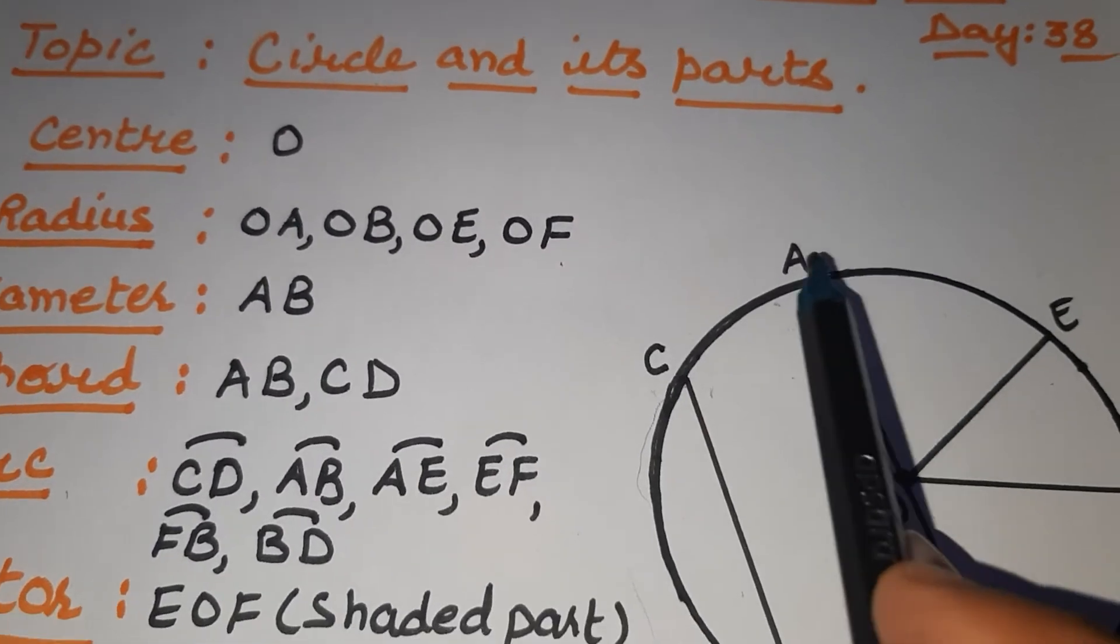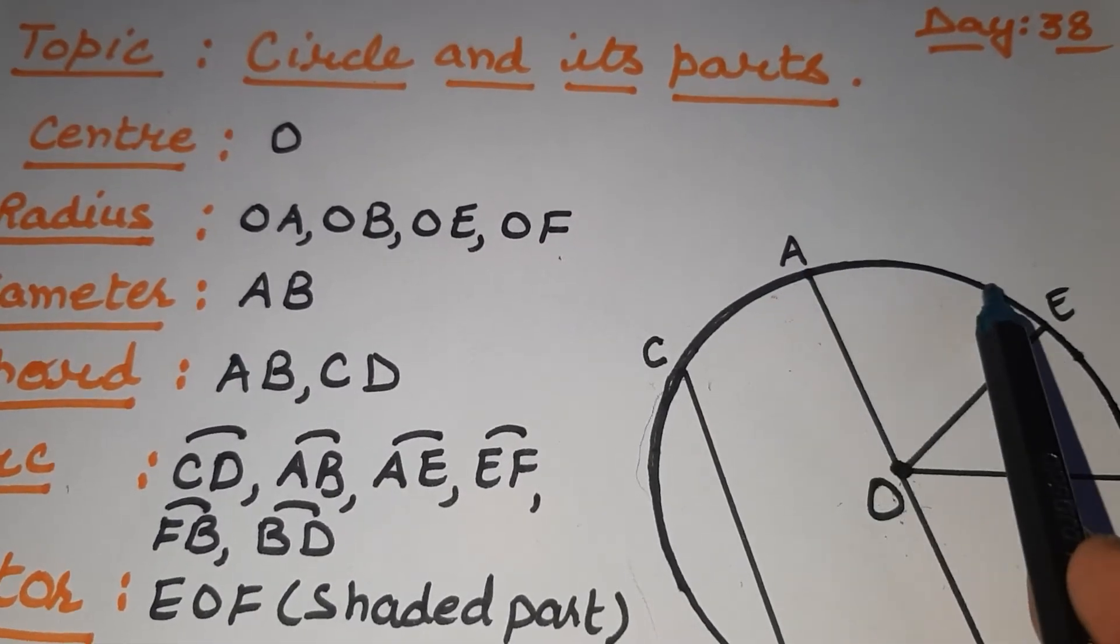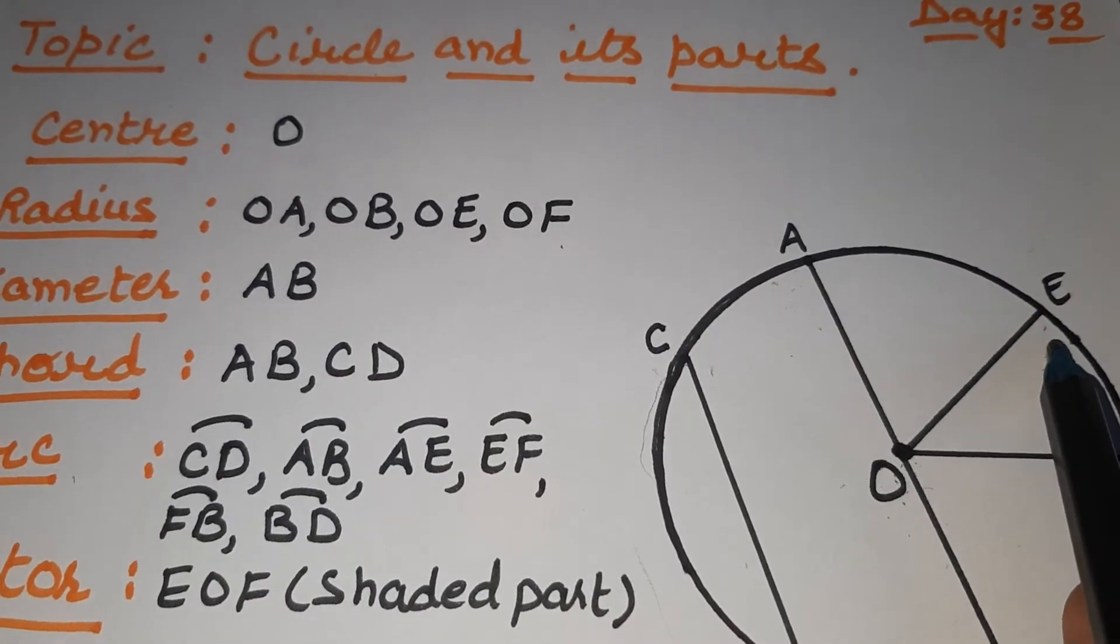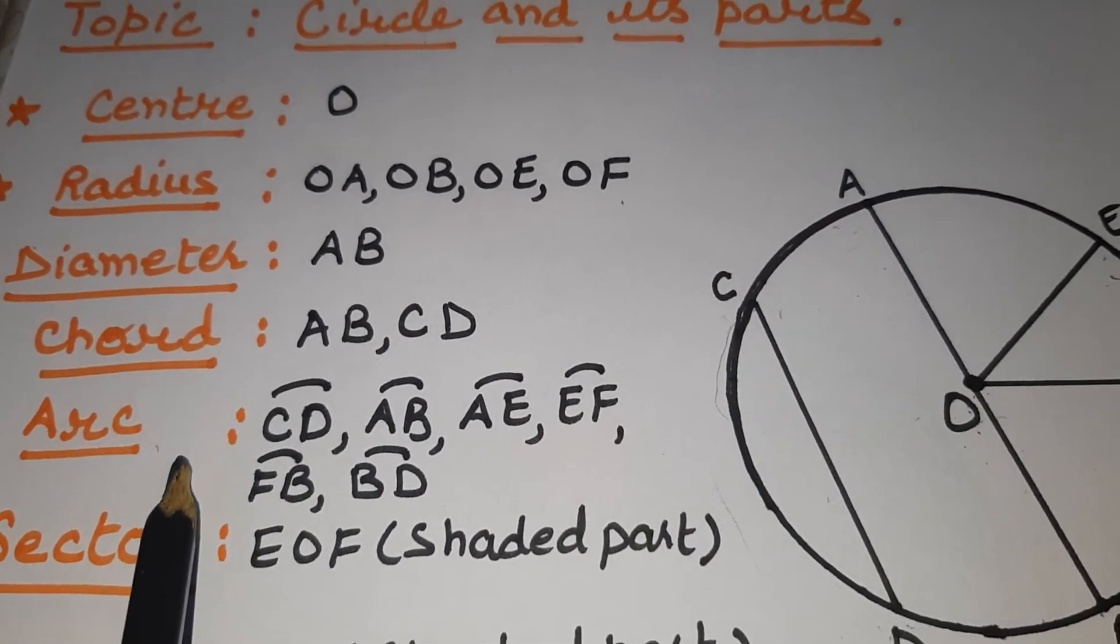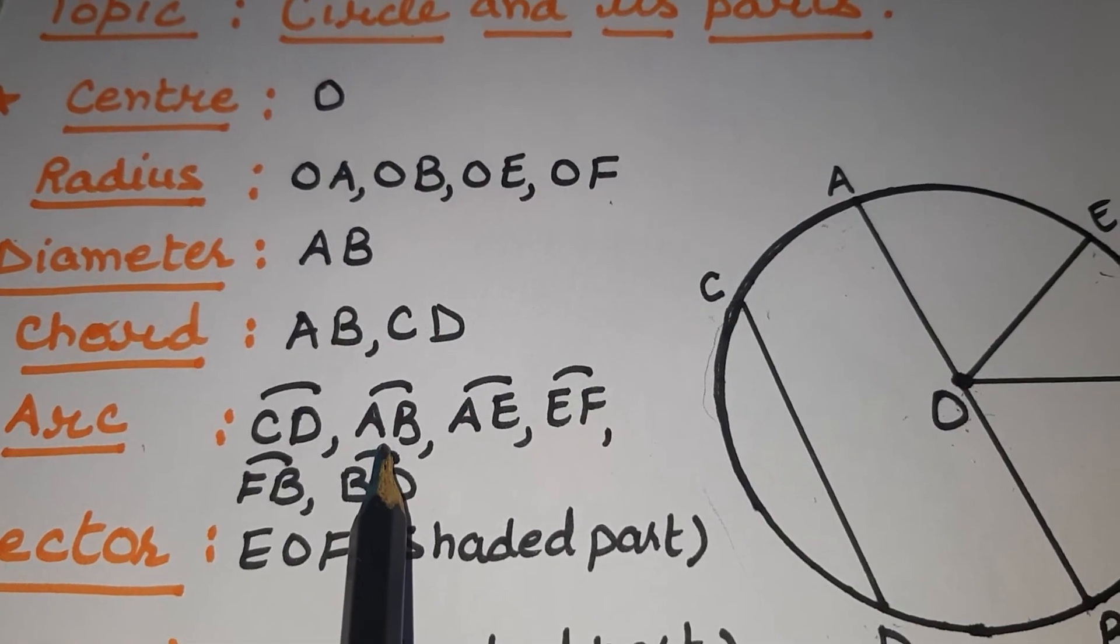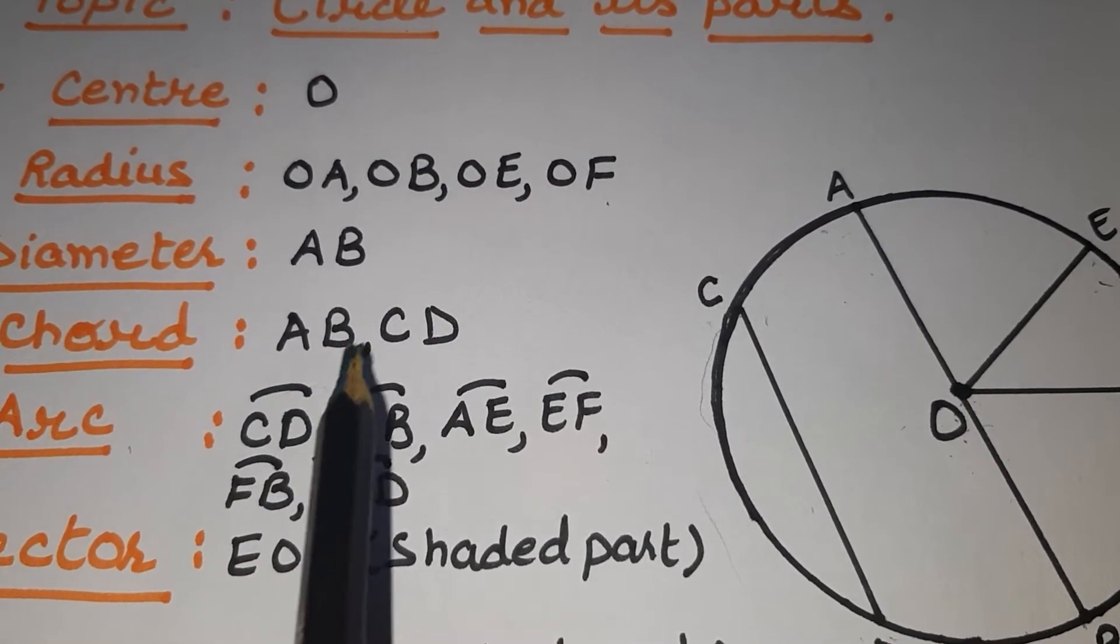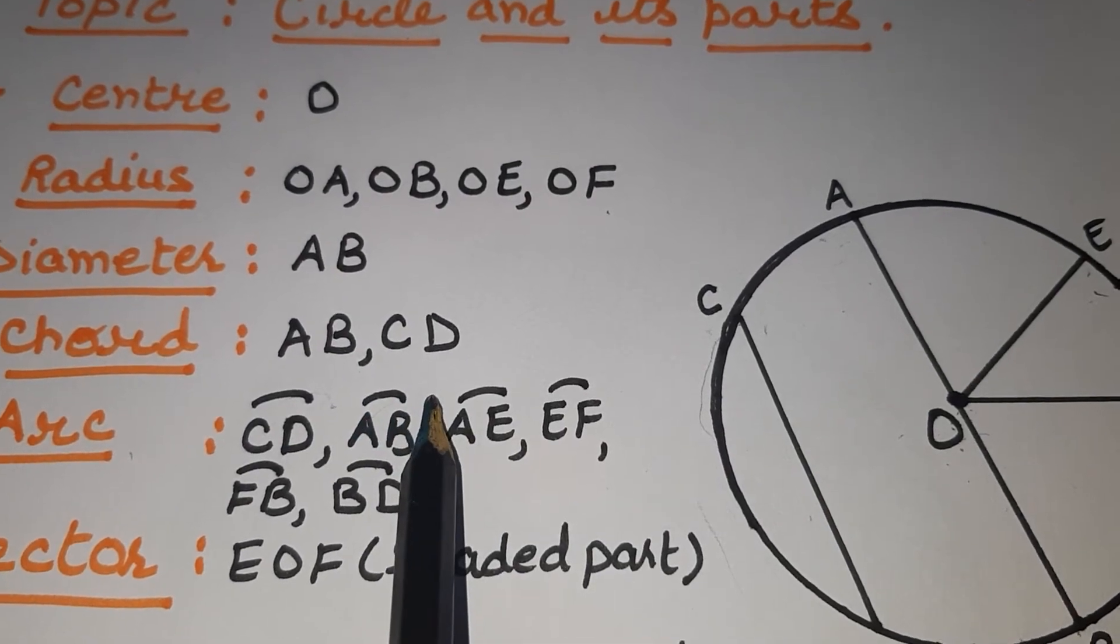This is arc. AE is arc, this one. Round portion on the circle, that is called arc. Or I say represent, how to represent this? So we put here arc symbol. This is arc symbol.